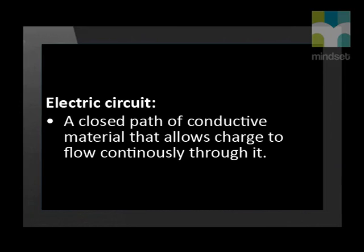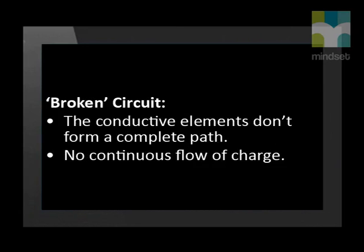Let's quickly summarize what we have learnt from the demonstration using the circuit board. An electric circuit is an unbroken loop or closed path of conductive material that allows charge to flow continuously through it. If a circuit is broken, its conductive elements no longer form a complete path and there will be no continuous flow of charge through it.